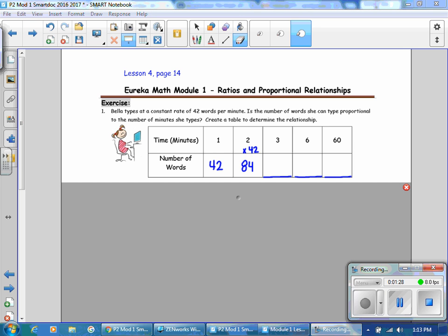So in 3 minutes, she types 3 times 42, which is 126 words. 6 minutes is 252 words and 60 times 42 is 2,520 words. And again, you are multiplying by the constant rate of 42 words per minute.